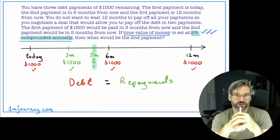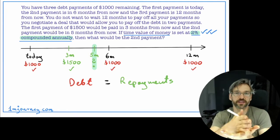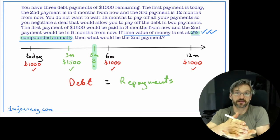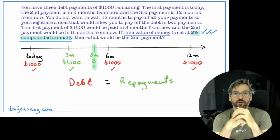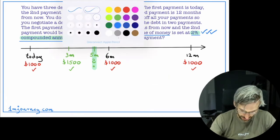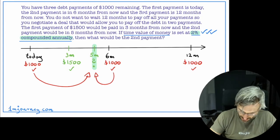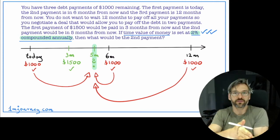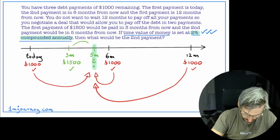If you're going to be comparing these things, remember you have to pick one date — you have to move all money to one particular date whenever you have an interest. The most convenient way would be to pick five months, because we don't know what that repayment at five months would be. So I'm going to move all my money to five months — all the debt payments and the $1,500 repayment.